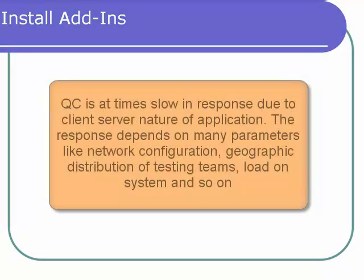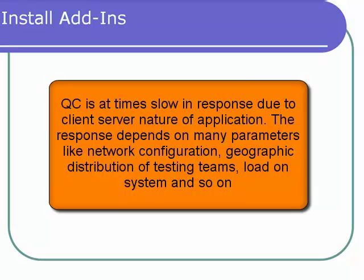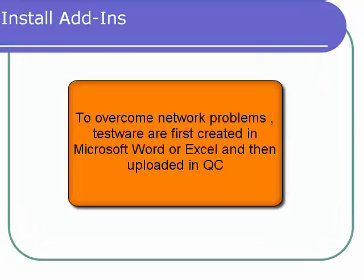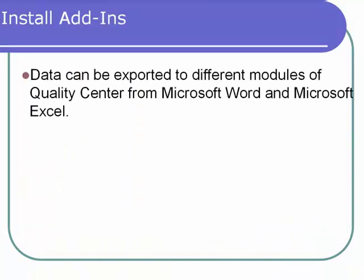Quality Center is a client-server architecture, and due to its very nature, it can at times be a bit slow depending upon the network settings and many other factors. The general practice is that requirements and test plans are created in Microsoft Word or Excel first, and then uploaded into Quality Center instead of directly creating them in Quality Center. Using Quality Center add-ins, data can be exported to different modules of Quality Center from Microsoft Word and Microsoft Excel.